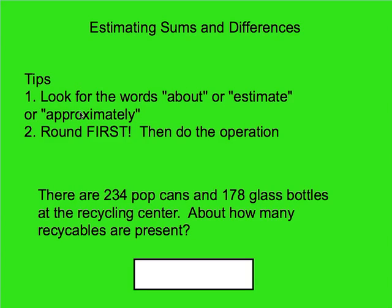My second tip is to round first. You want to round all the numbers you're adding or subtracting first, and then do that operation second. It doesn't do you any good to solve the problem and then just round the answer. You want to find easier numbers that are already rounded and do the adding and subtracting on those first.